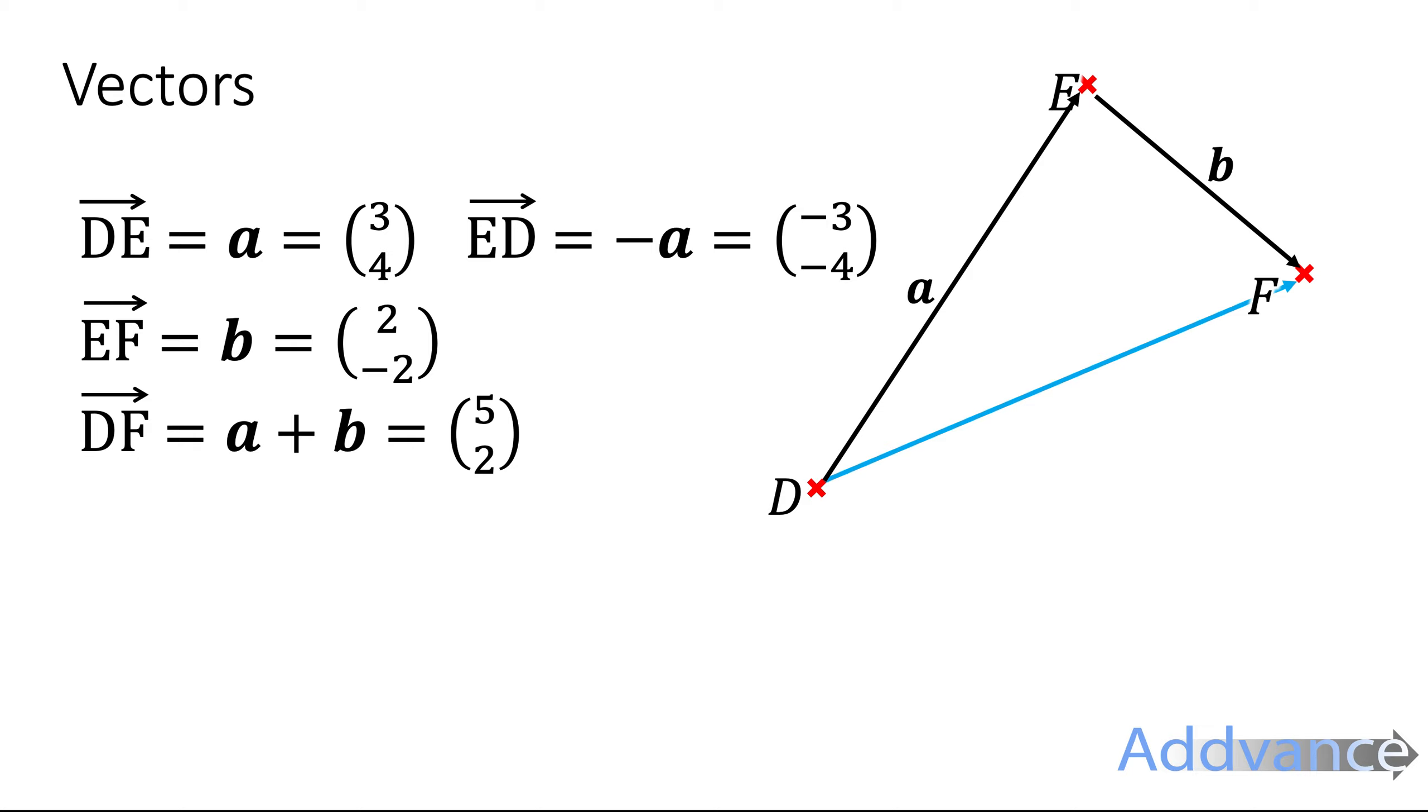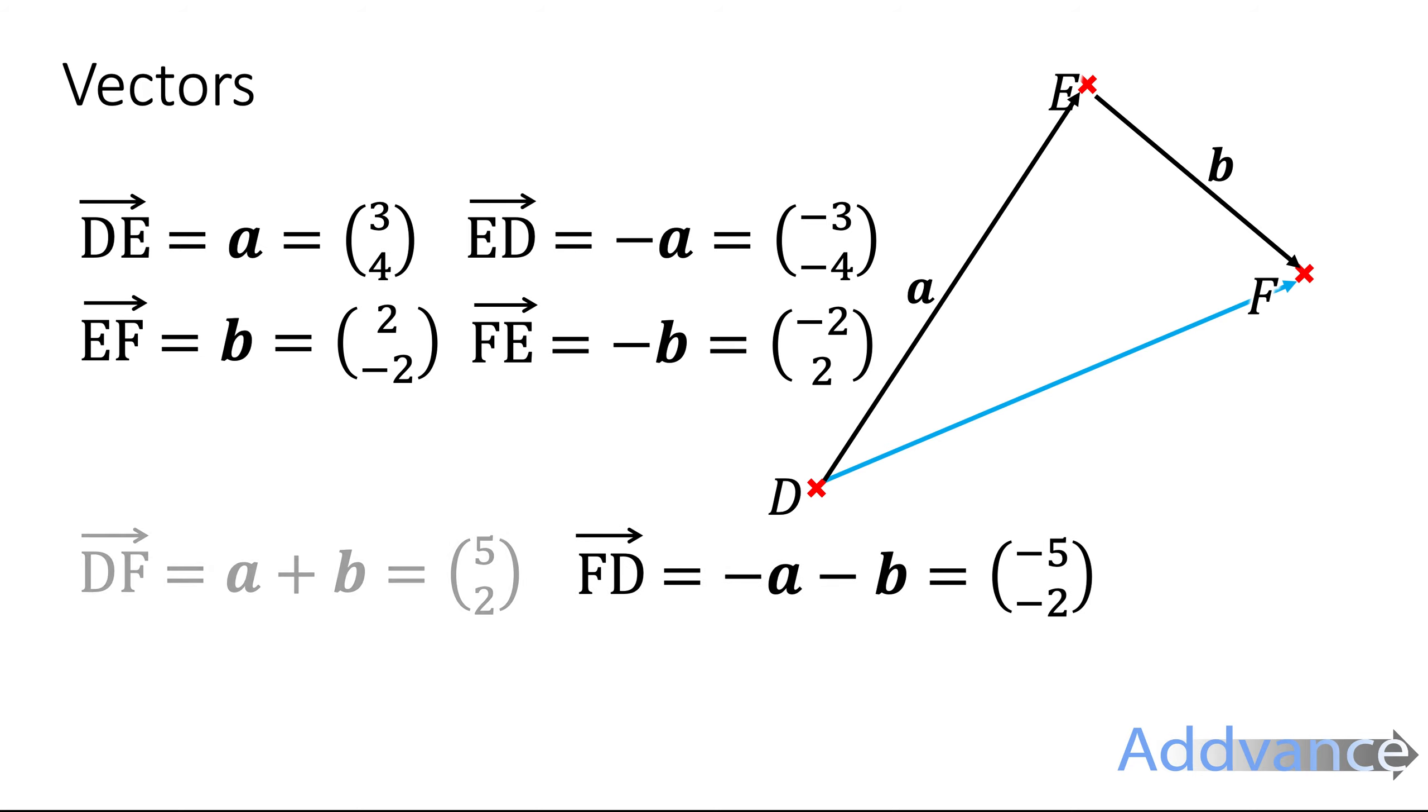Same from E to F we do F to E is minus b and from D to F well with F to D will be negative and negative make everything negative. Now just remember that to go backwards with vectors we want to make them negative.